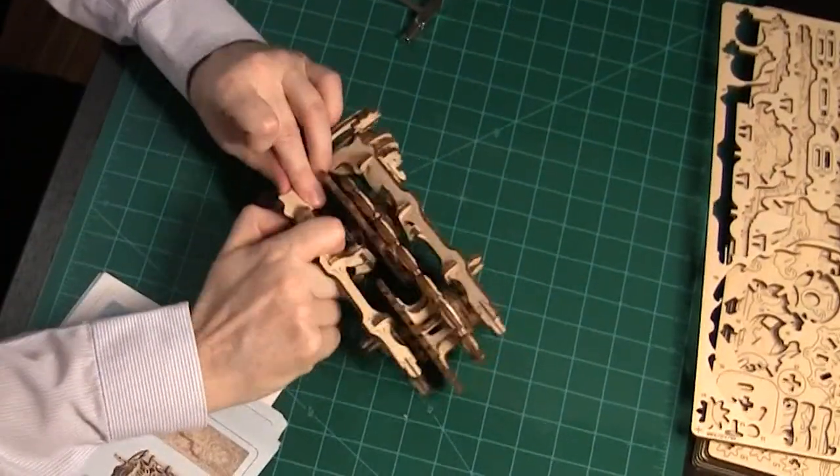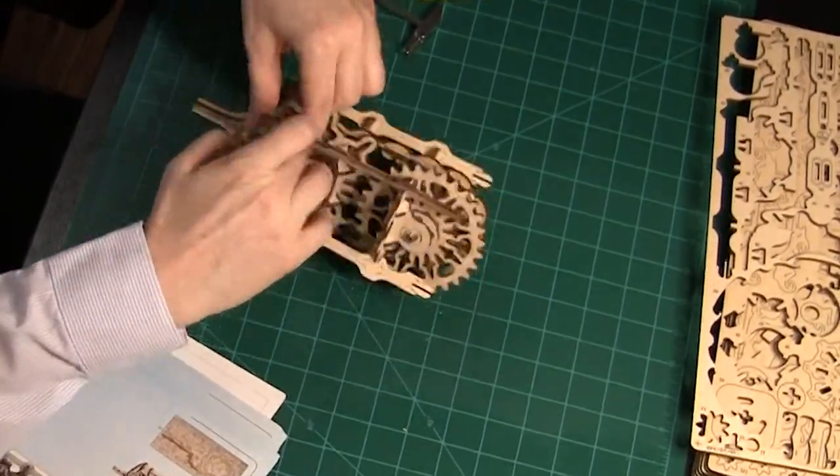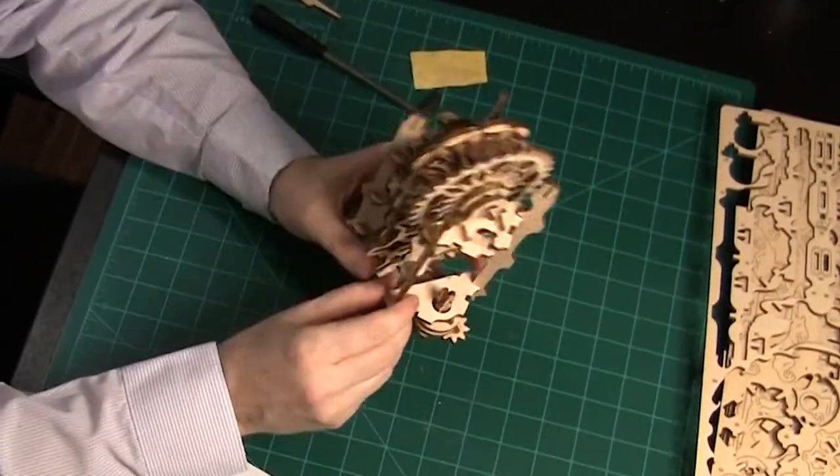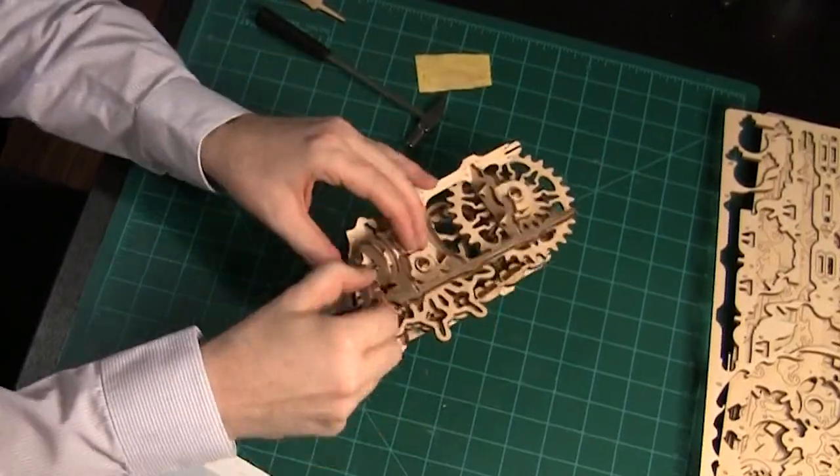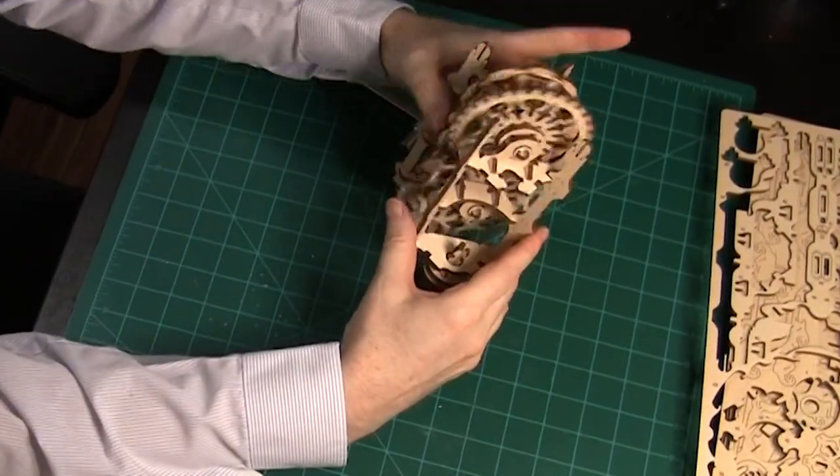This is where waxing the pieces is really helpful. Test that all of the gear assemblies turn, the two on the sides and the big one in the middle. Note that the bottom large gear is off-center.